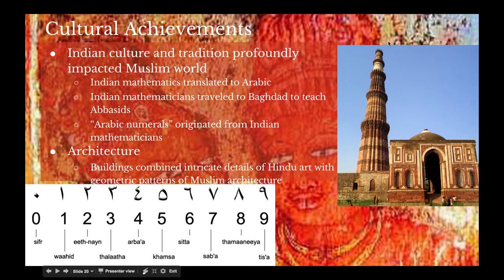Indian culture and tradition had a profound impact on the Muslim world. Indian mathematical teachings, notably algebra and geometry, were translated into Arabic. Mathematicians from India traveled to Baghdad, the capital of the Abbasid Caliphate, where they instructed Abbasids on their intellectual achievements, notably in math. Arab astronomers and mathematicians then added to the body of knowledge that their Indian counterparts started, resulting in constant intellectual communication between India and the Muslim world.